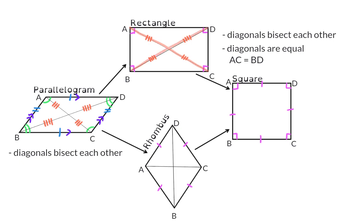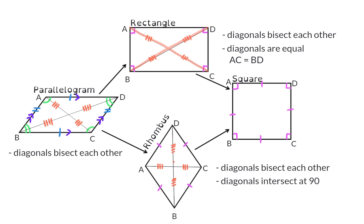Looking at the rhombus, it is still true that the diagonals bisect each other, but the extra property making this a rhombus is that the diagonals bisect perpendicularly — so all angles in the middle are 90 degrees. Similar to the kite, here both diagonals bisect the angles, meaning the angles at D and B are all the same size, and the same goes for the two angles at A and the two angles at C.